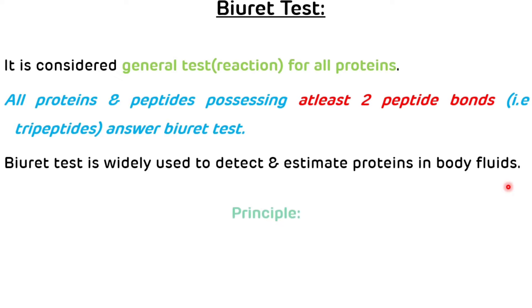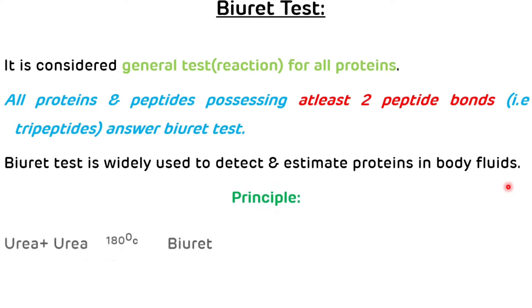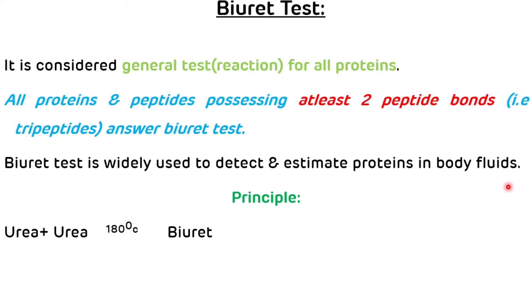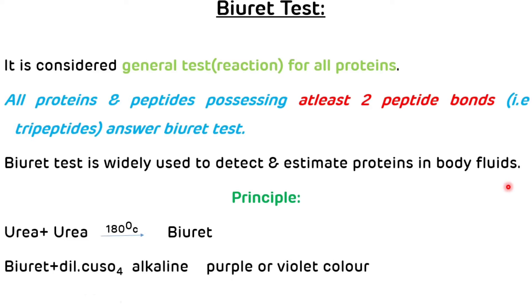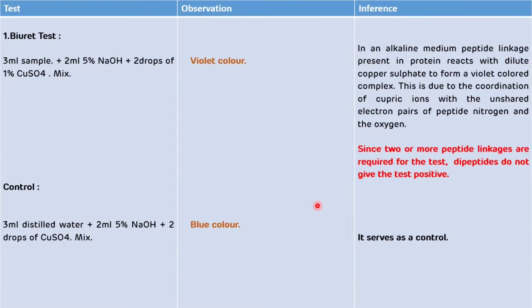Now we will see the principle of the Biuret test. Two molecules of urea condense at high temperature to produce an organic compound called biuret. This biuret reacts with diluted CuSO₄ in an alkaline medium and forms a purple or violet color. That is the principle of the Biuret test.